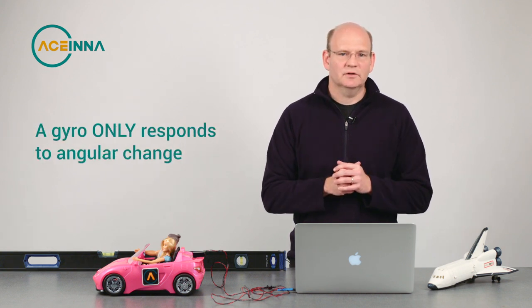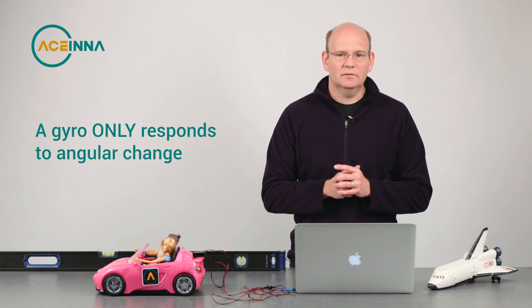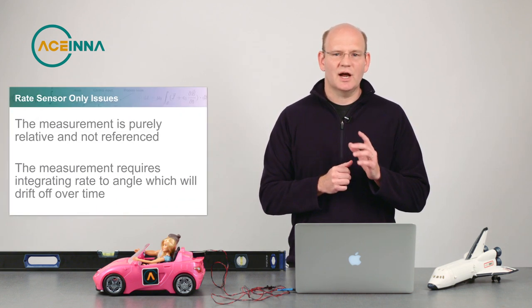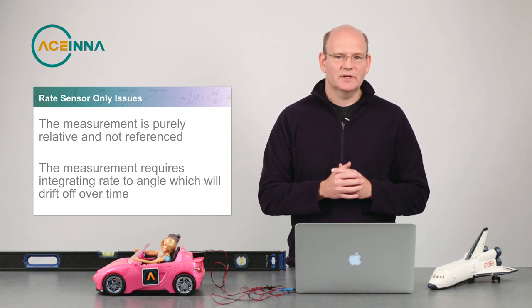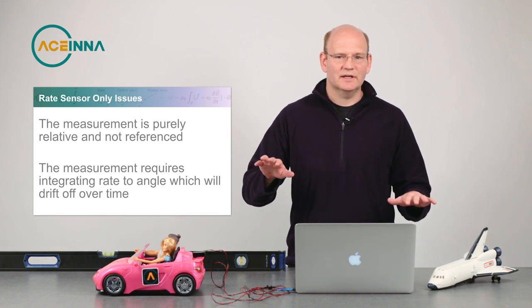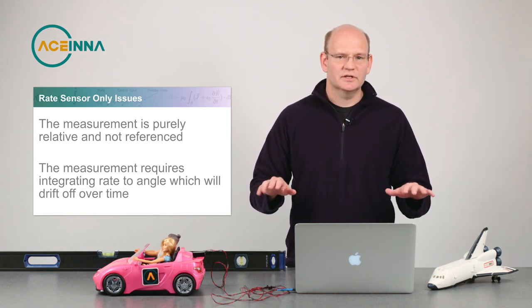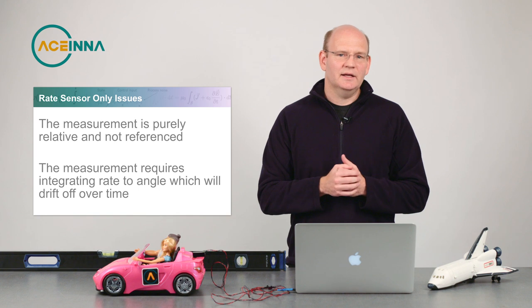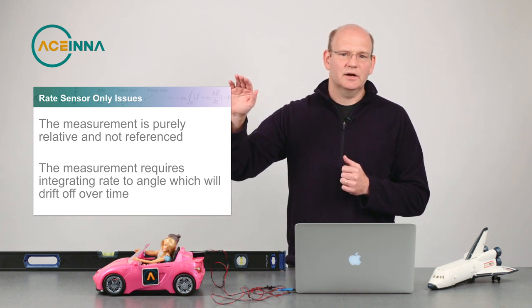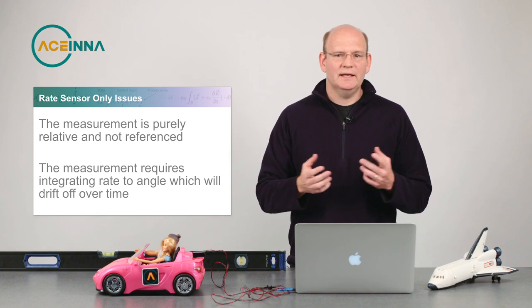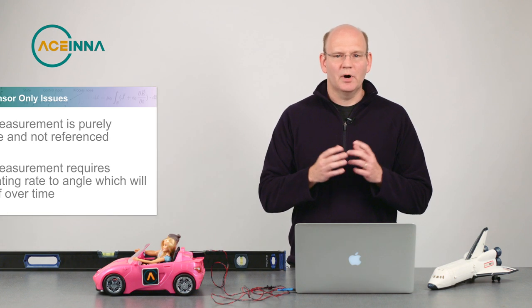It only responds to angular change. But, unfortunately, it's not as easy as just using a gyro because a gyro has two big problems for measuring dynamic tilt. Those problems are, one, it's a relative measurement and has no absolute reference like a tilt or inclination sensor does. And two, integrating angular rate to angle will slowly drift off, causing attitude error to grow. So, we really need a solution that combines both acceleration and gyro measurement.